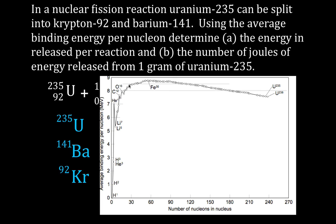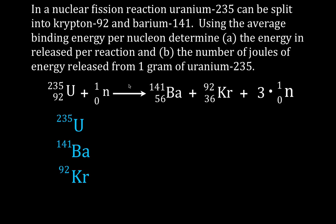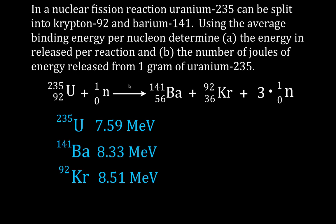We need to know the exact average binding energy, so we look them up on a table — or they might be given in the problem. The average binding energy per nucleon is: 7.59 MeV for uranium-235, 8.33 MeV for barium-141, and 8.51 MeV for krypton-92. These are usually given in mega electron volts.